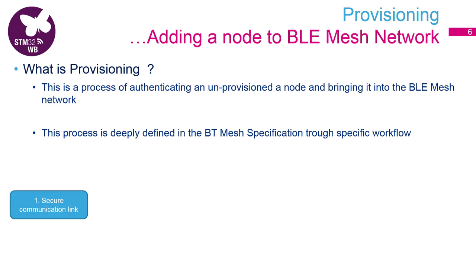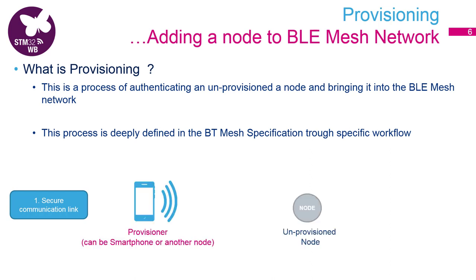Let's now discuss the concept of provisioning. Provisioning is a process to add a node inside the BLE mesh network, and this process is fully defined by Bluetooth SIG. First, we need to establish a secure link between a provisioner — which can be a smartphone or even another node in the network — and an unprovisioned device. The unprovisioned node is advertising or beaconing so it can be detected by the provisioner.